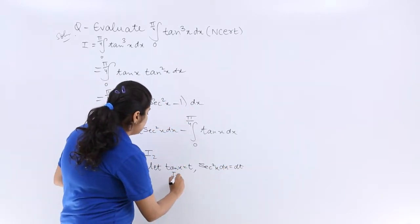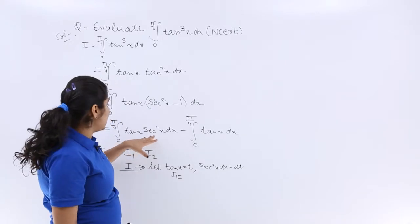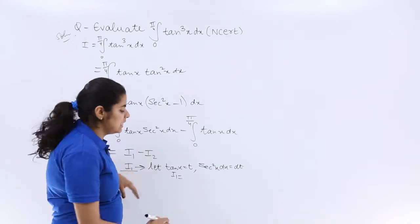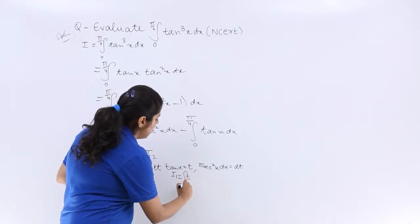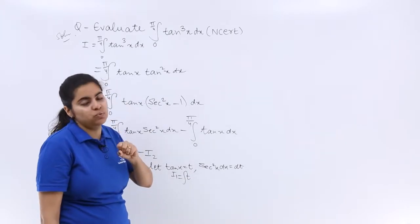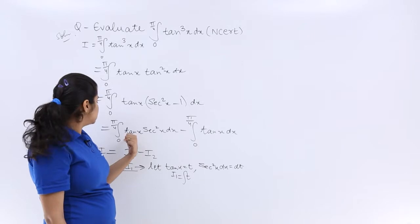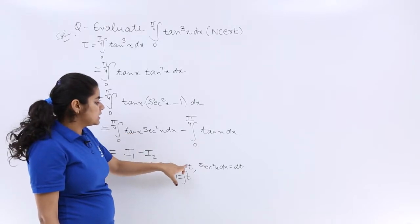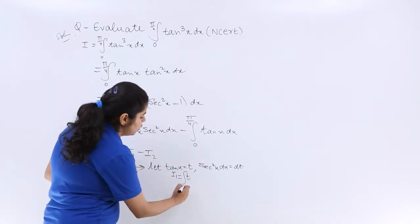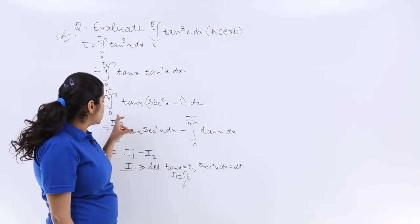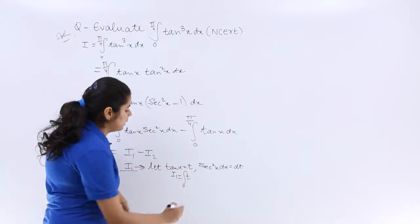Now the limits would change because here it is 0 to π/4. When x = π/4, tan(π/4) = 1.